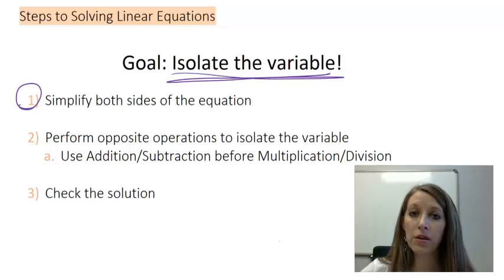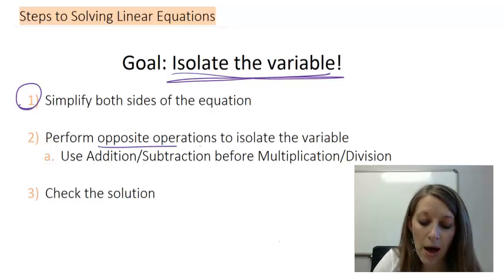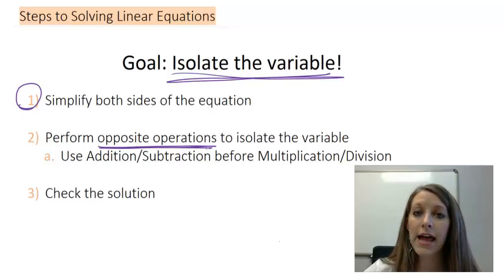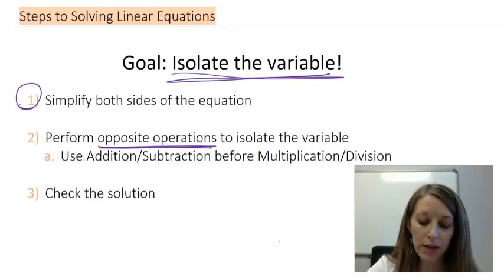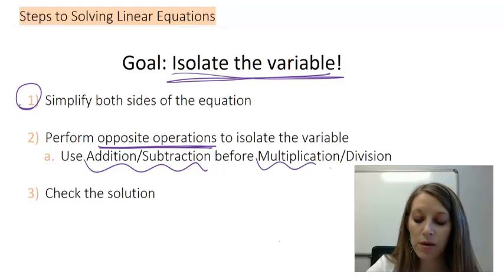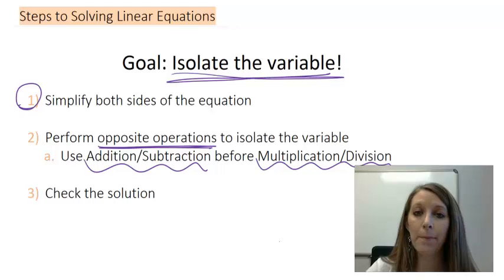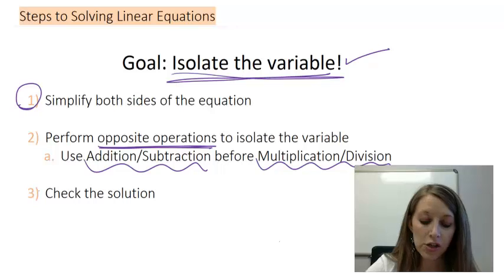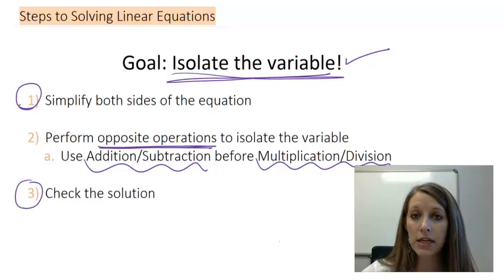So whenever you move things about the equal sign, you need to do opposite operations, and that's where those last properties of equality come in handy, the ones that we just learned. The thing to know is that we need to make sure to add and subtract opposite operations before we multiply and divide opposite operations. And I'll show you why here in an example. At this point, we should have our solution. We should have our variable isolated. So we should make sure that we have the correct answer before we hand it in.